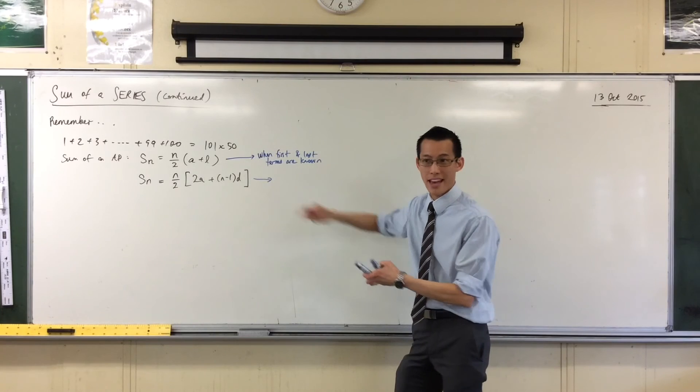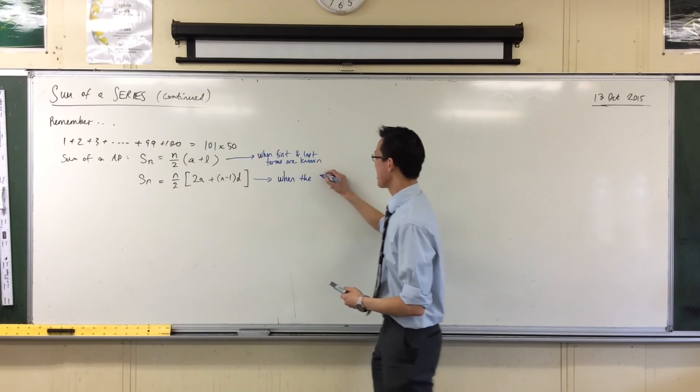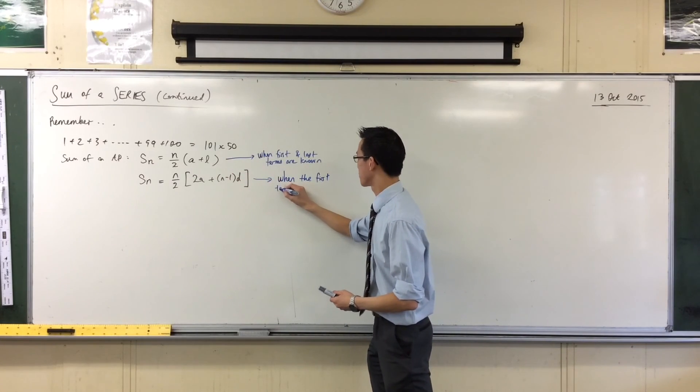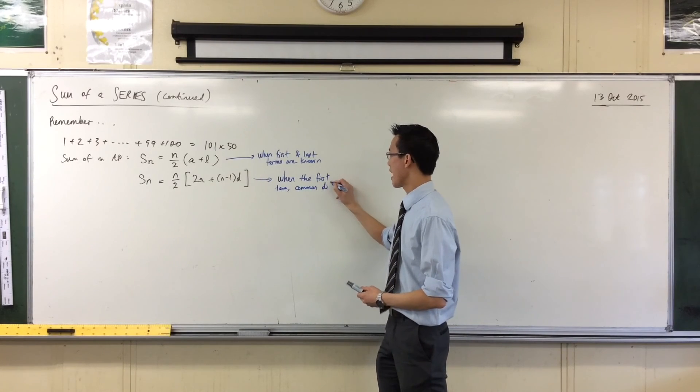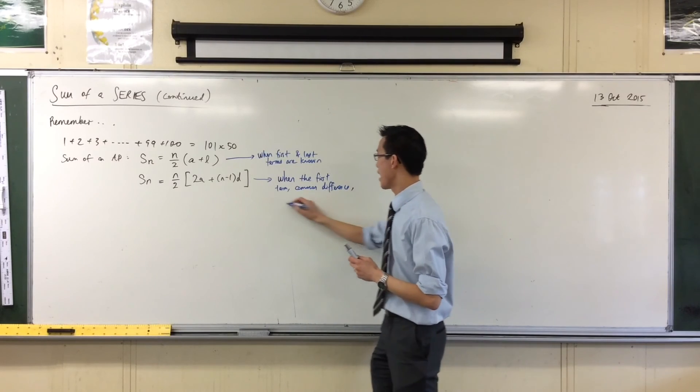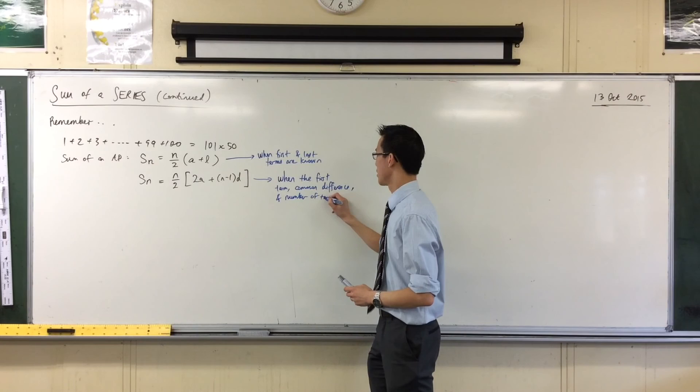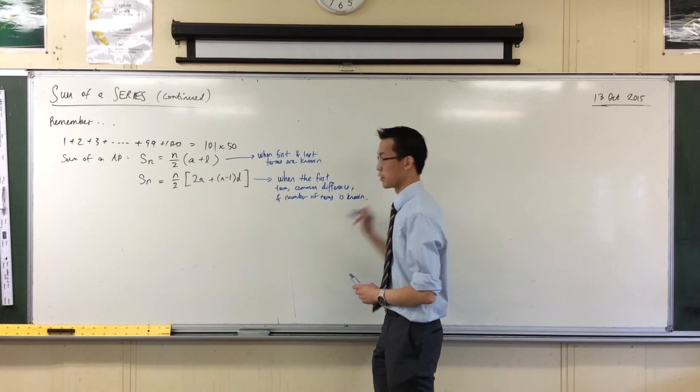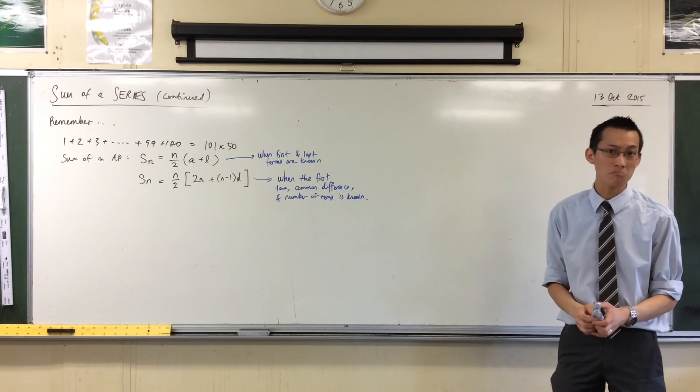So I use this instead when I know, when the first term, there's my a in there, right, common difference, and what's the last piece of information that I need? Look at the formula. Yeah, how many terms there are, and number of terms is known. For what it's worth, I actually didn't write it, but you need to know the number of terms for the first method too, because you need to know how many pairs you've got. Does that make sense?